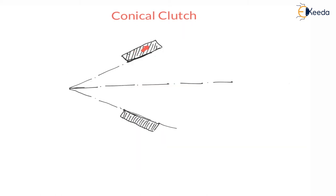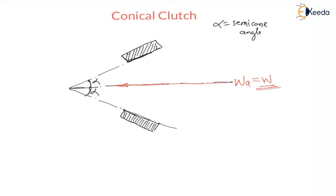In the schematic view, these are the friction materials or clutch plates, inclined with the horizontal at an angle alpha. Alpha is the semi-cone angle, and 2 alpha is the cone angle. The springs are applying axial force WA on the plates. There is a pressure acting on the contacting surface.